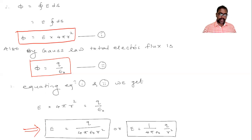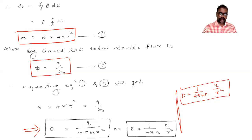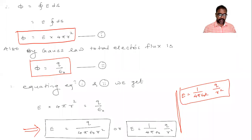Similarly, if the charge sphere is placed in a medium with dielectric constant K, the electric intensity formula becomes E = (1 / 4πε₀K) × Q/r². In the present case, the charge sphere is in air, so only ε₀ appears in the formula.